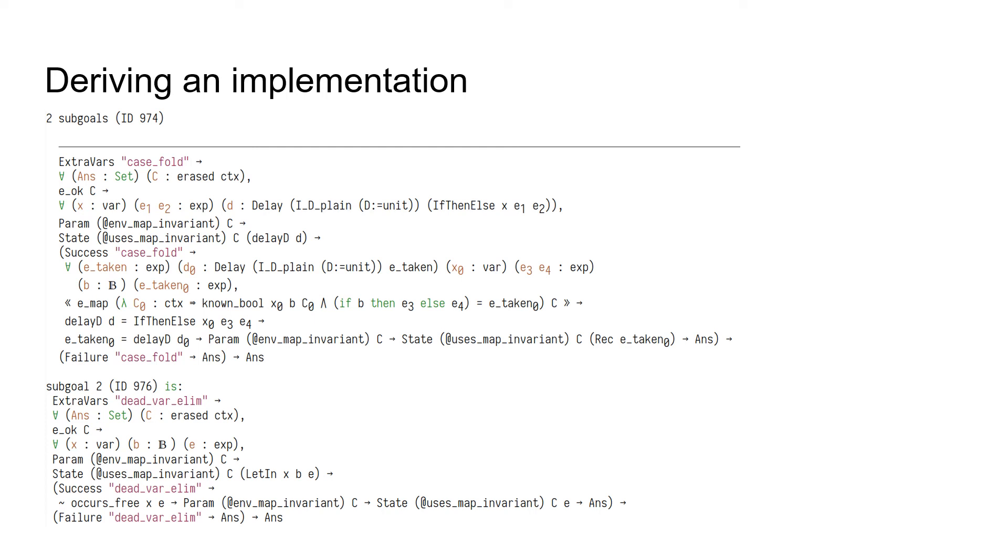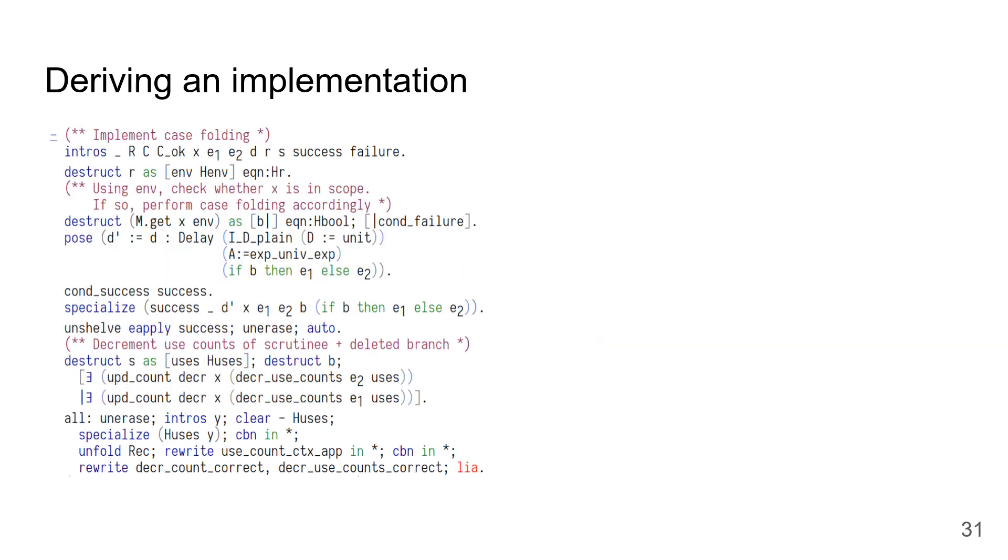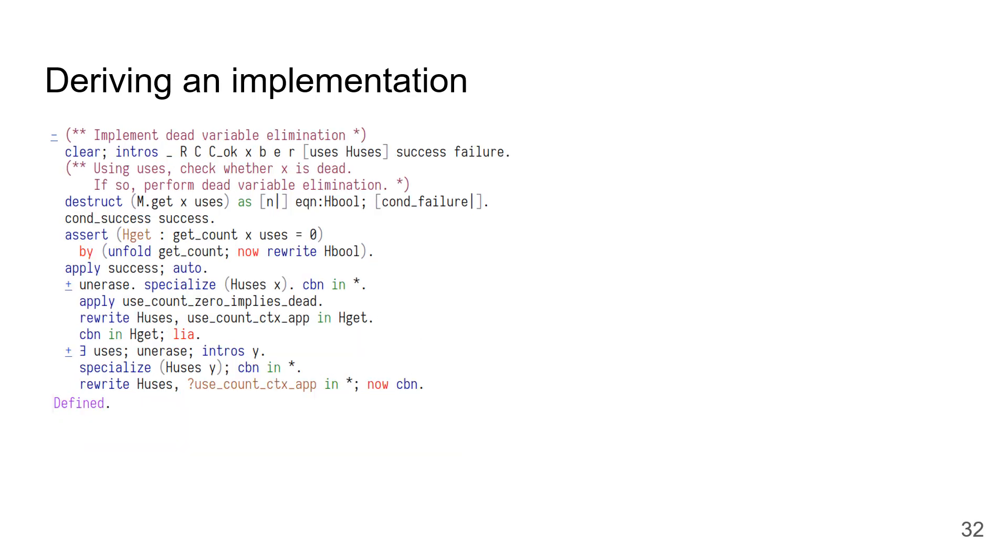Similarly, the second goal is the tool's way of asking the user to explain how to implement dead variable elimination, and again, the type to prevent the user from making a mistake. In each case, the user fills the hole by using tactics, which generate Coq code to implement the corresponding rewrite rule, and then prove that code correct. Here's what the tactic looks like for implementing and proving case folding correct, and here's the tactic for implementing and proving correct dead variable elimination. After running these tactics, zero proof obligations remain, and the user obtains an implementation of the desired program transformation proved correct with respect to a set of syntactic rewrite rules in Coq.